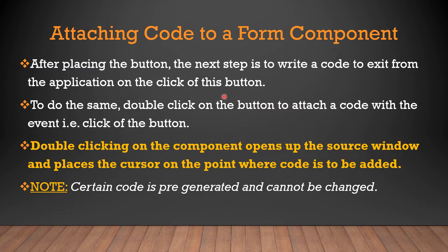Whenever we click on a button, some event is associated with it. Means, whenever we click the button, some task is assigned to it and it will execute after the click. We give code to handle this. Here, the code we need to give will exit the application on the click of the button. To do this, you have to double-click on the button to attach code with the event — the click of the button.